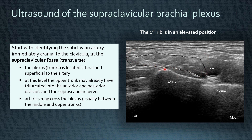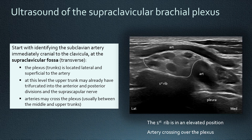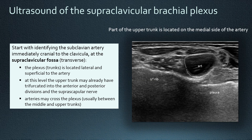In this individual, the plexus has a different appearance with thicker fascicles. Moreover, it has a thick artery crossing over the plexus at this level, and also the first rib is in an elevated position. In another individual, the plexus has a part which is medial to the subclavian artery — a part of the upper trunk hangs over, so to say, on the medial aspect of the subclavian artery.